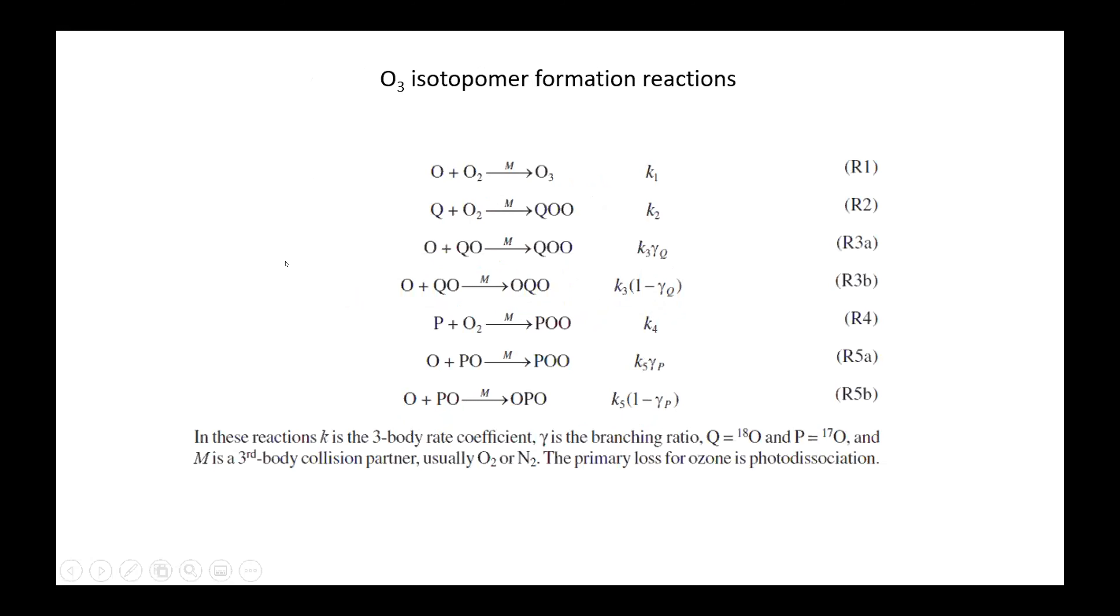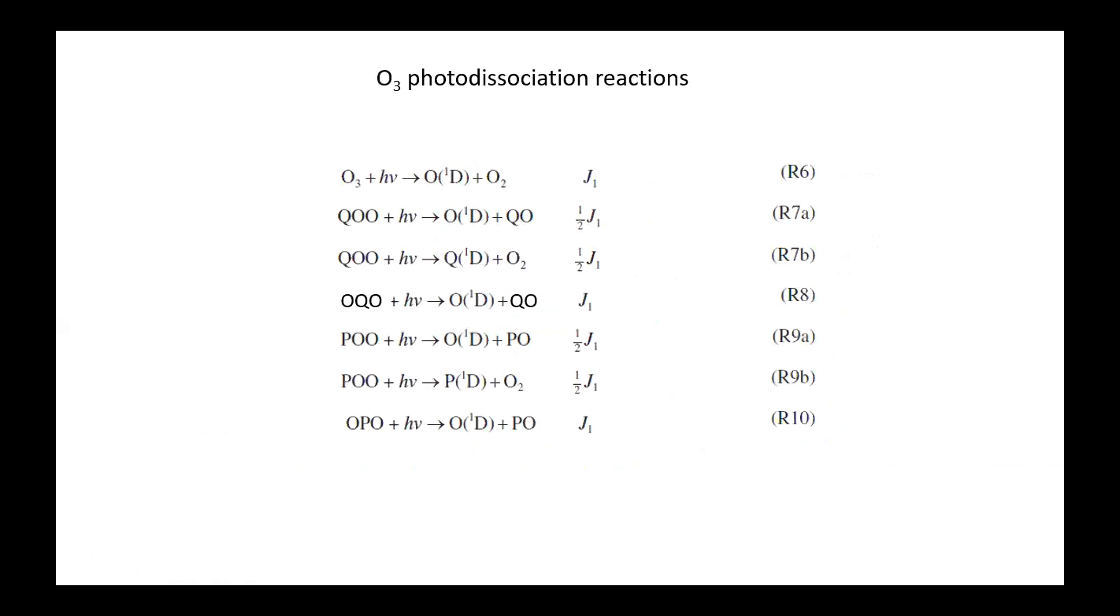So what we do here is we want to simulate because this is difficult to measure. Many of the species have been measured, but not all of them. Radicals are tough to measure oxygen isotope composition for. So we do have to do calculations to try to predict what the compositions are for the atmosphere. This is the ozone formation reaction, all gas phase kinetic reactions, and the various isotopomers of ozone that can form where q is 18O and p is 17O. There's an asymmetric isotopomer and a symmetric isotopomer, which is key to the Marcus mechanism for understanding ozone mass independent fractionation.